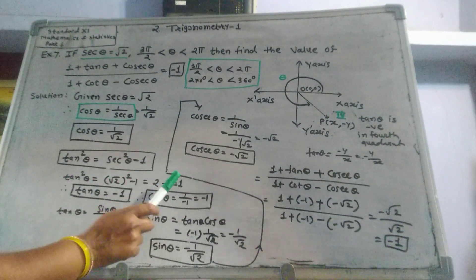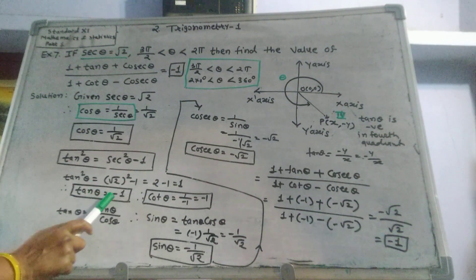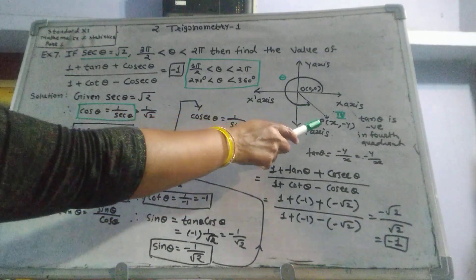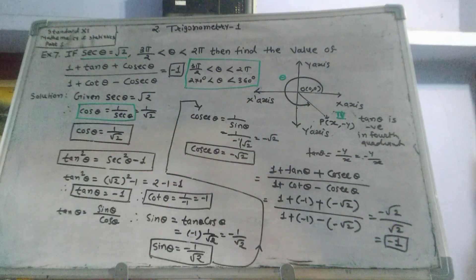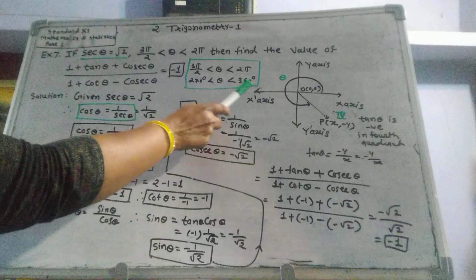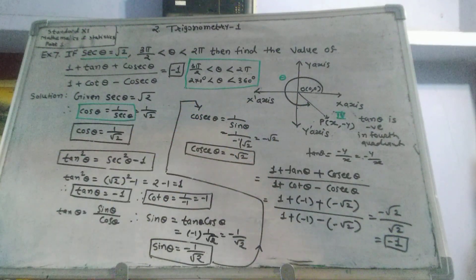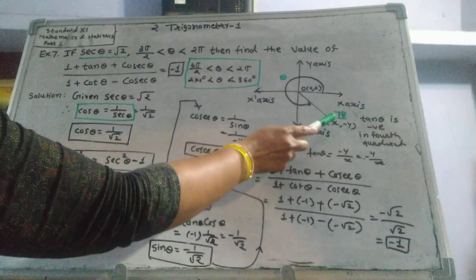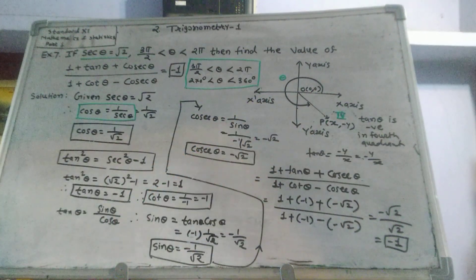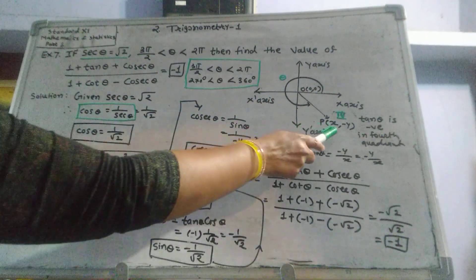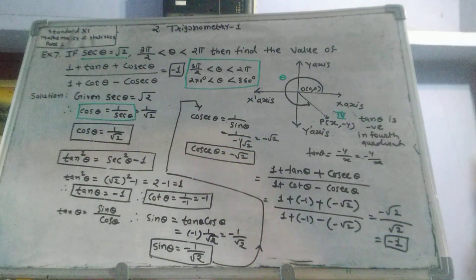So tan squared equals 1. But we take tan equal to negative 1, why? Because tan theta in the fourth quadrant is negative, because angle theta is in the fourth quadrant, because it is greater than 270 and less than 360. Therefore point P is located in the fourth quadrant and y coordinate is negative, therefore tan theta is negative.